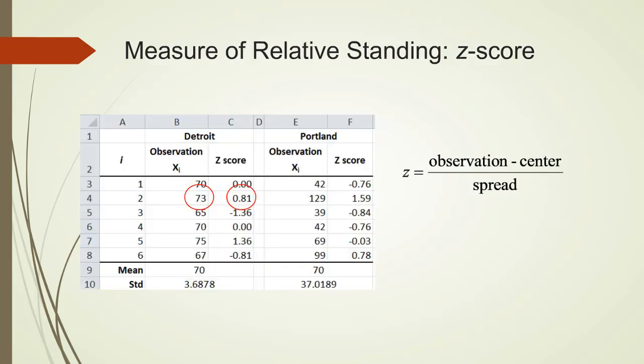For the hotel example we worked on earlier, to find a z-score for each of the six hotels in Detroit, we would have to find a sample mean and sample standard deviation for the six hotels in Detroit first. They are 70 and 3.6878 respectively. Using those two numbers, we can find a z-score for each of the six hotels. For example, the second hotel costs $73 per night. 73 is the observation. I subtract the mean of 70 from 73 and divide by 3.6878 to get a z-score of 0.81. I repeat the same calculations for the hotels in Detroit.